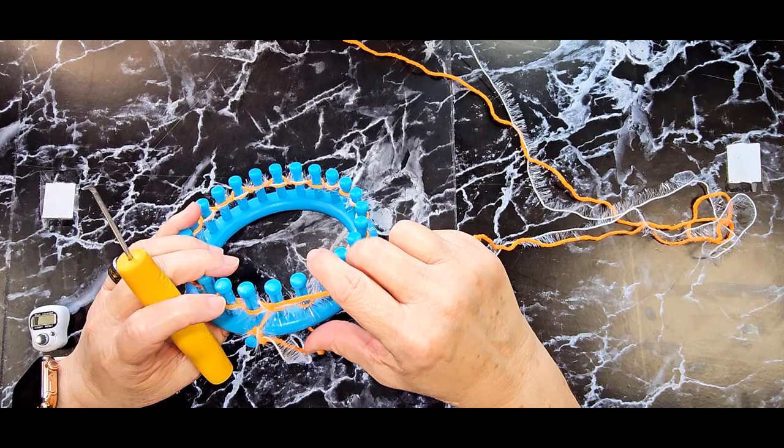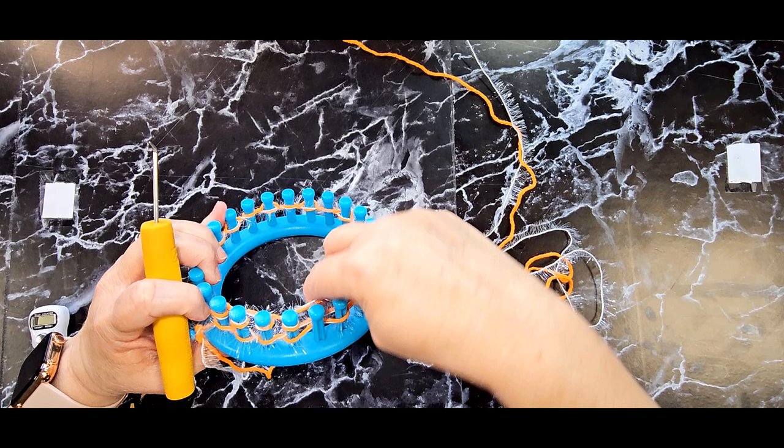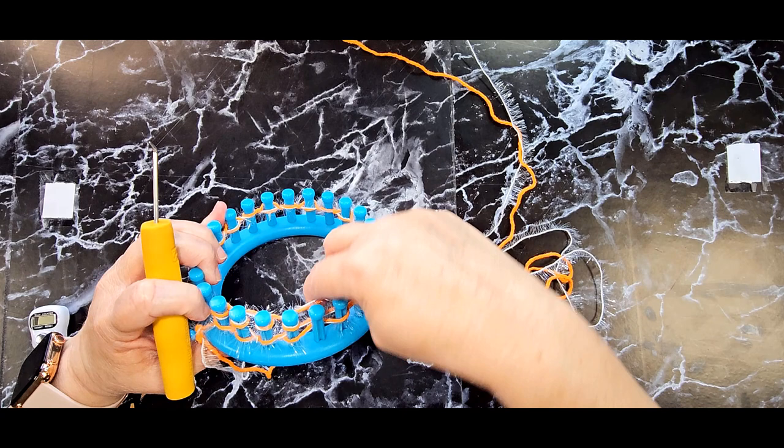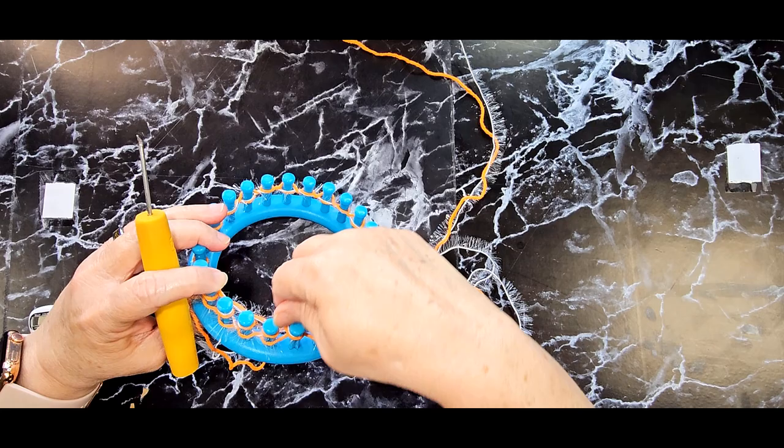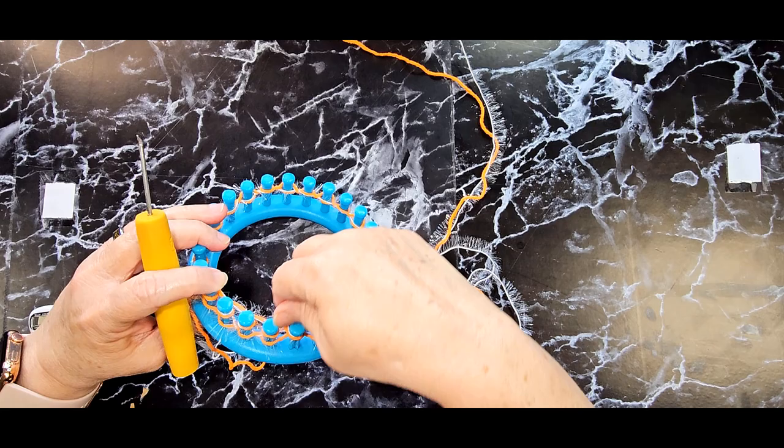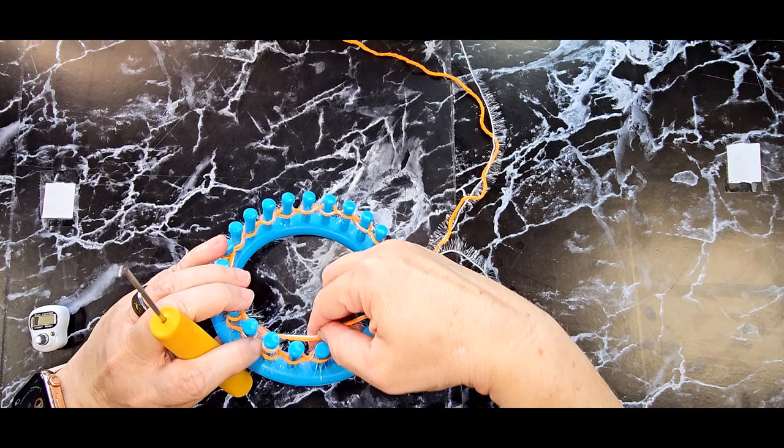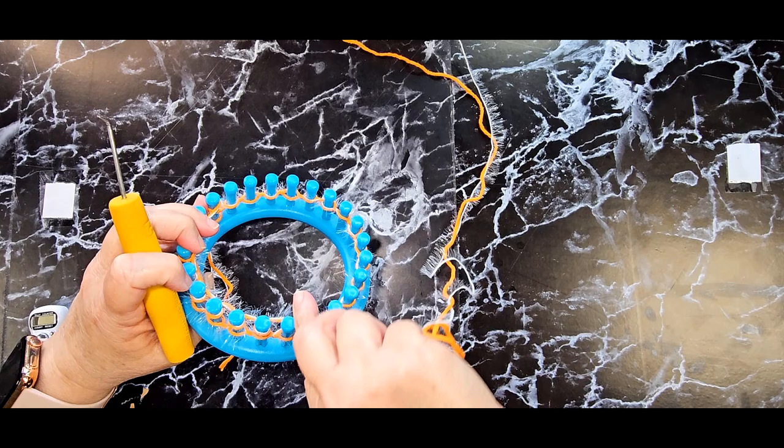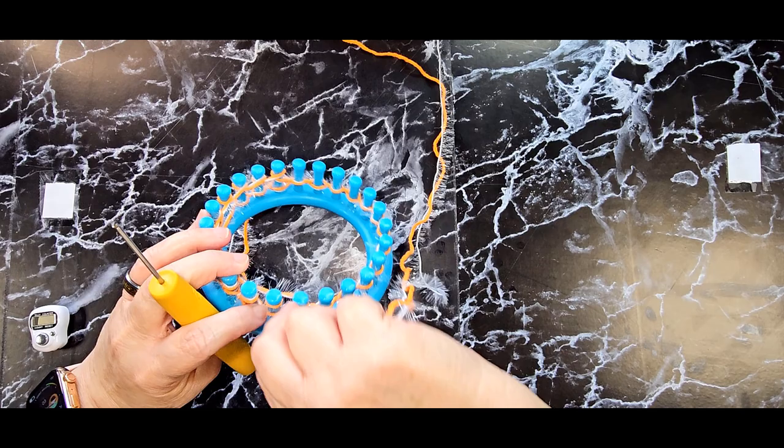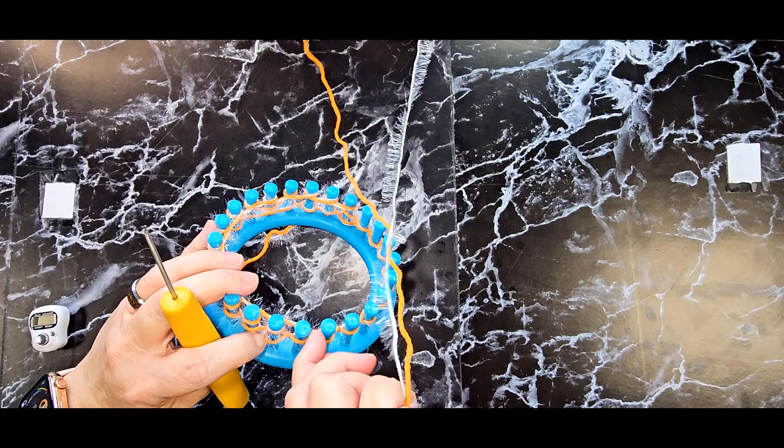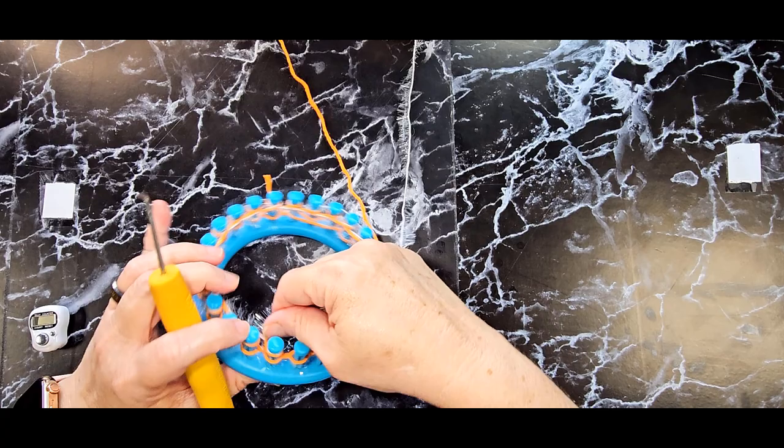We're just going to e-wrap the whole thing. So just wrap both strands, not too tight, all the way around. Looks like I missed one there. But it will work out in the end. Just don't overthink it. But try to make sure you do get every peg if you can.